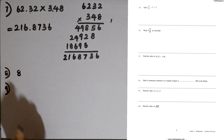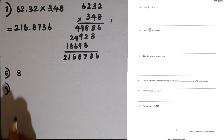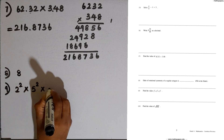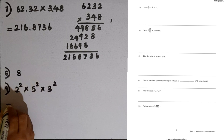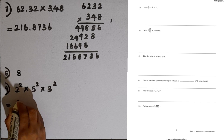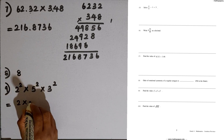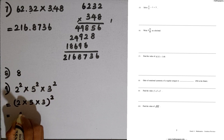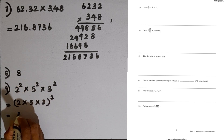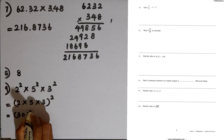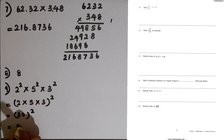Question number 9: find the value of 2 to the power 2 multiplied by 5 to the power 2. We can write this as a power of a product: 2 times 5, all to the power 2. That is 10 to the power 2, which equals 100. Wait — 2 times 5 is 10, and 10 times 3 is 30, so 30 to the power 2 equals 900.